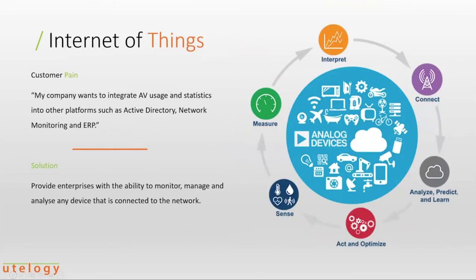It's not just AV devices that we need to bring into our analytics and management and control. We're looking at the Internet of Things — occupancy sensors, temperature sensors, HVAC controls, lighting controls. In a smart building, facilities managers are increasingly wanting to bring AV into the arena of smart building management. Bringing these IoT devices into our AV world from the perspective of management, control, and analytics is becoming very, very increasingly important.